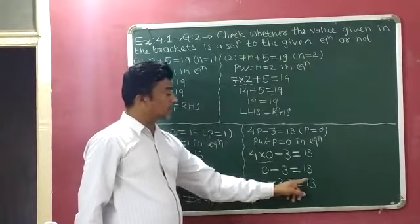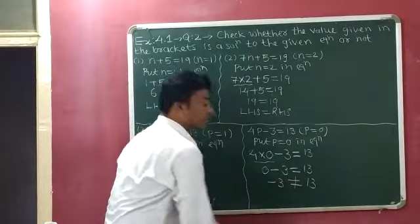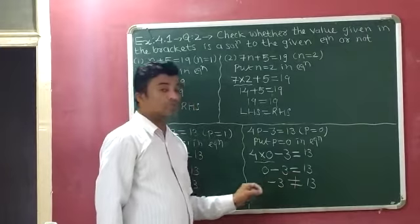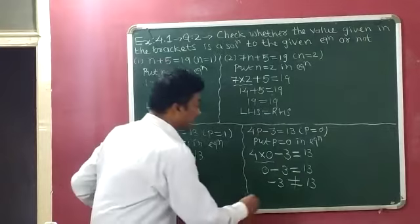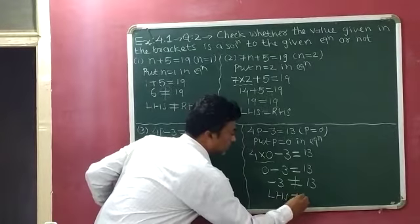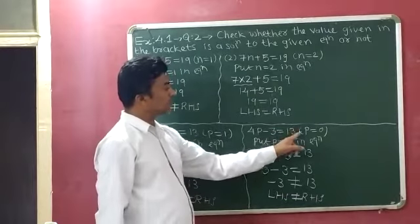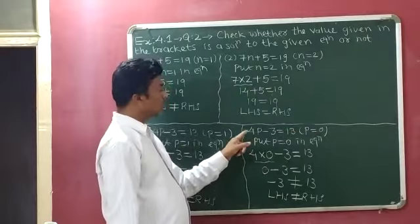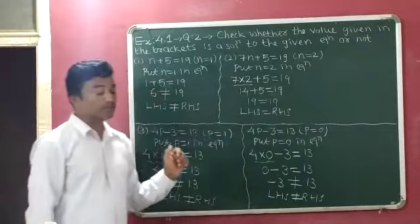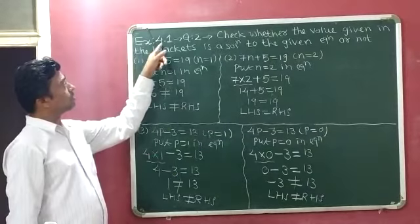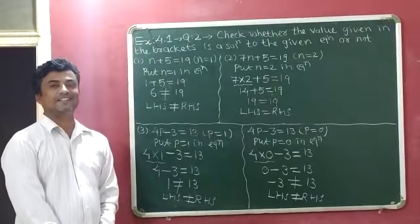Minus 3 equals 13 is never possible. So minus 3 is not equal to 13, meaning LHS is not equal to RHS. Therefore, P equals 0 is not a solution of the equation 4P minus 3 equals 13. This is the complete explanation of Exercise 4.1, question number 2. I hope you can understand this. Thank you.